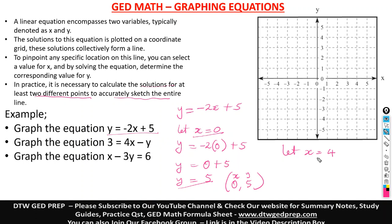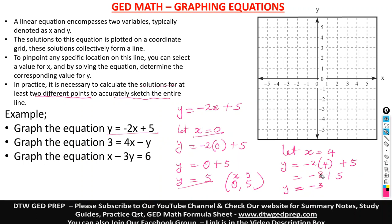Let X equal to four in this equation. We have Y is equal to negative two times four, plus five. Negative two times four is negative eight, plus five. What's negative eight plus five? That's negative three. Remember our sign rules — when you have a negative and a positive number, you subtract and take the sign of the bigger number. So X is four and Y is negative three.